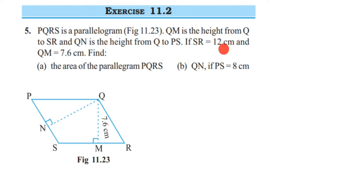We are given SR = 12 centimeters and QM = 7.6 centimeters. Using this data, we have to find the area of the parallelogram PQRS.